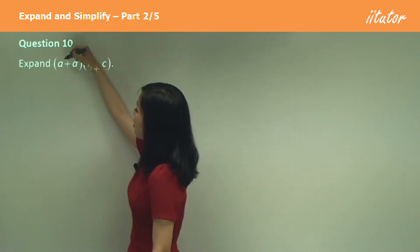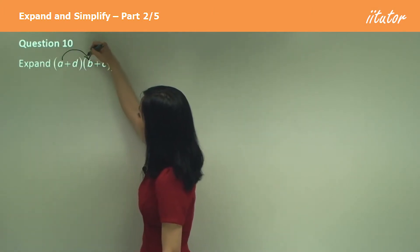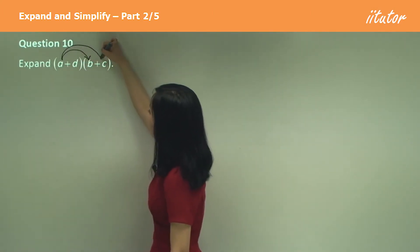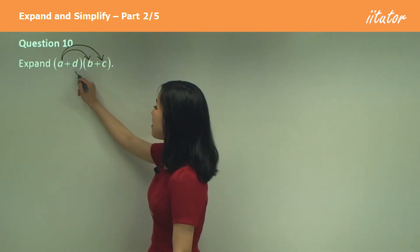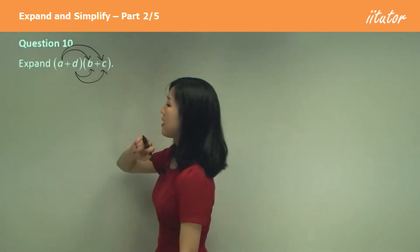Start with A. You go A times B and A times C. But we also have to do the same thing for D. So we do D times B and we also do D times C.